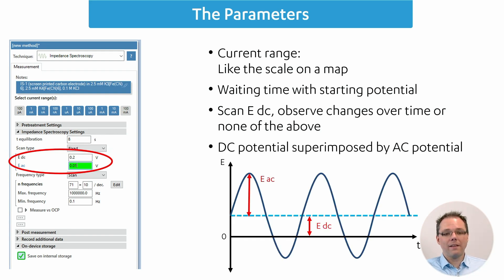The next two options are the EAC and EDC, and they basically define where your sine wave is and how it looks like. During an impedance measurement you apply an EDC, so a constant potential, and you superimpose on that an EAC, so a sine wave shaped potential.